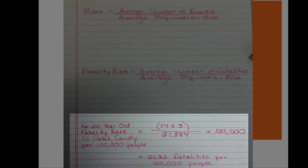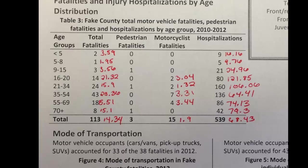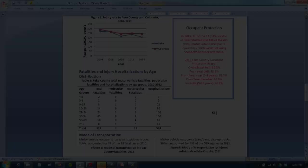For Fayette County 16 to 20 year olds, we take 14 deaths divided by 3 years, then divide by the population size and multiply by 100,000. That turns out to be 21.32 fatalities per 100,000 people. After calculating the fatality rate for each age group, the 16 to 20 year olds have the highest rate of total fatalities at 21.32 and the highest rate of hospitalizations at almost 122 per 100,000. So it seems this group is a good target area.